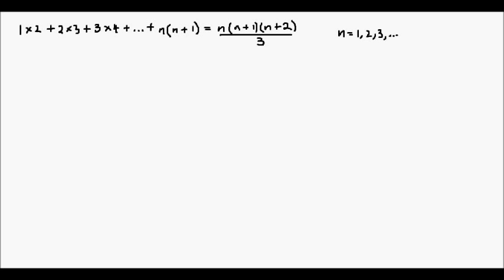Hello and welcome. In this video we're going to show that the series 1 times 2 plus 2 times 3 plus 3 times 4, plus so on and so forth, to n times n plus 1, is equal to n times n plus 1 times n plus 2, all over 3, for all positive integers.